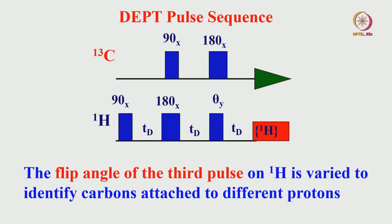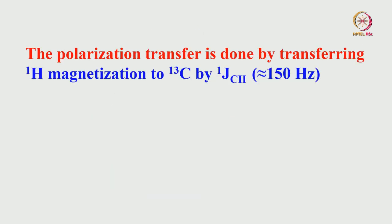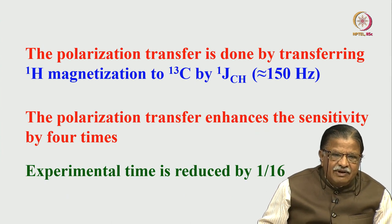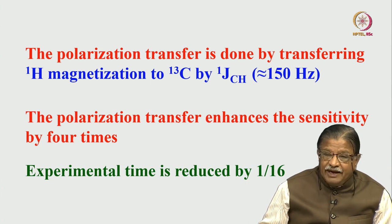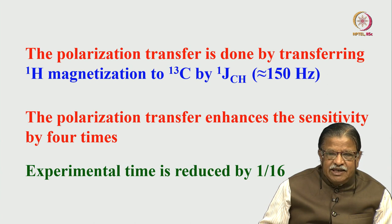By doing the polarization transfer from proton magnetization to carbon-13, we reduce experimental time by a factor of 16. If an experiment takes 16 hours normally, using DEPT with polarization transfer reduces it to 1 hour—a great reduction. We perform three experiments with flip angle theta set to 45°, 90°, and 135°. Based on these three experiments, the phase and intensity of the carbon peaks vary depending on the flip angle: whether the peak is positive, negative, or zero in intensity.